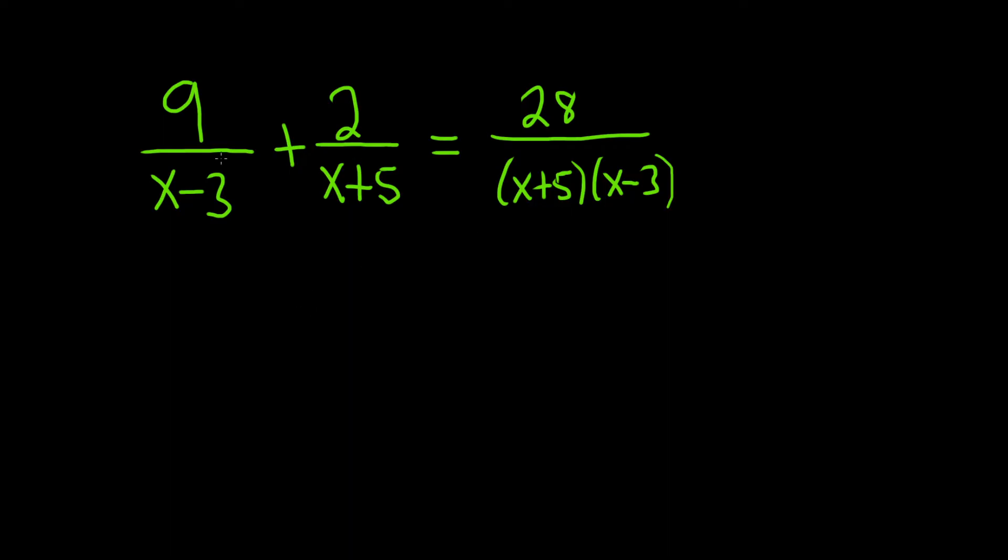So to solve for x, we have to get rid of these fractions. You'll notice here there's an x minus 3, so it's beneficial to multiply both sides by x minus 3. But at the same time, you have an x plus 5, so you probably also want to multiply by x plus 5.